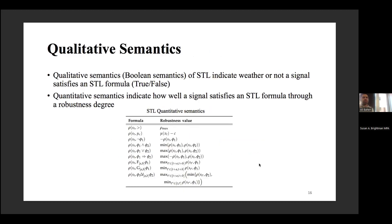By using signal temporal logic, we can specify safety constraints and apply them to the RL setup. STL has a grammar and a quantitative semantics that shows how well a signal satisfies a safety constraint — for example, one signal may satisfy a constraint better than another. It shows us to what degree a signal meets the specification.